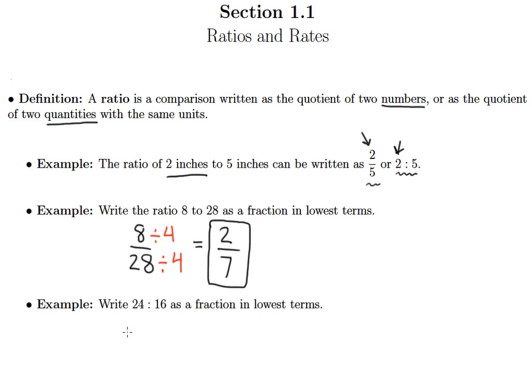The next example says write 24 to 16 as a fraction in lowest terms. Again, the first number goes on top, the second number goes on bottom. And I want to look for common factors of 24 and 16. And I can see that 8 would be the largest number that goes into both 24 and 16. So I'll go ahead and divide both top and bottom by 8. And when I divide 24 by 8, I of course get 3. When I divide 16 by 8, I of course get 2. So 3 halves is my fraction written in lowest terms.